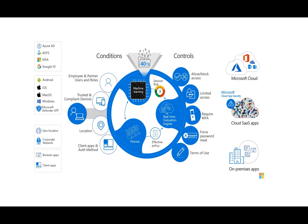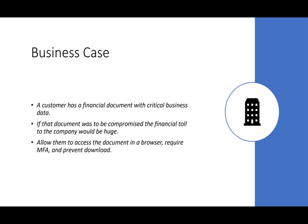When looking to implement this solution, you should look at it at an application level — define a risk score for each application and then apply these controls based off the criticality of that app itself.